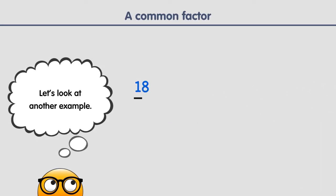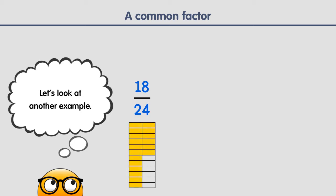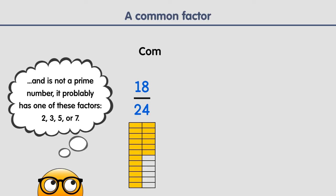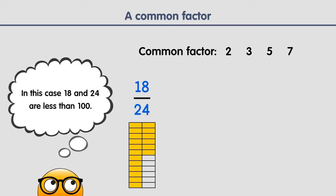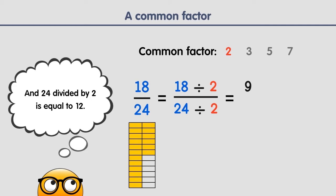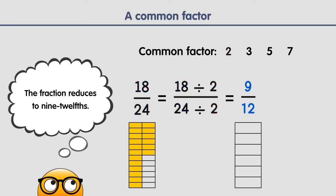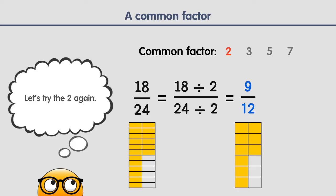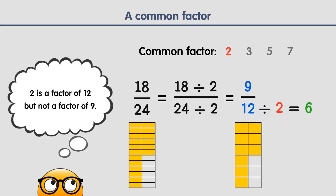Let's look at another example. Reduce this fraction to its lowest terms. First we have to find a common factor. If a number is less than 100 and is not a prime number, it probably has one of these factors. In this case 18 and 24 are less than 100, so our first attempt is the 2. The fraction reduces to 9 twelfths. We repeat the procedure and have to find a common factor. Let's try the 2 again. 2 is a factor of 12, but not a factor of 9.